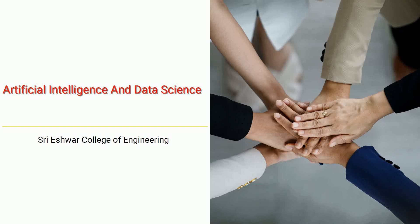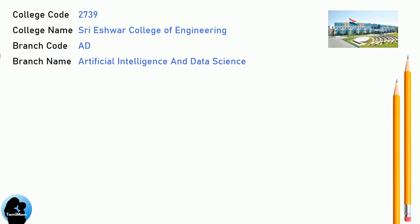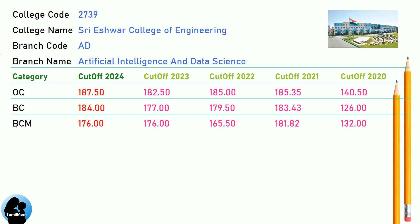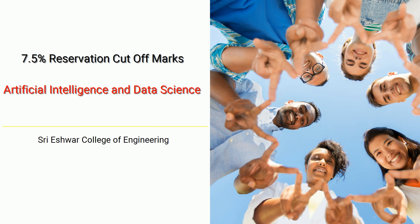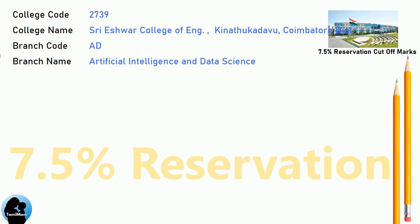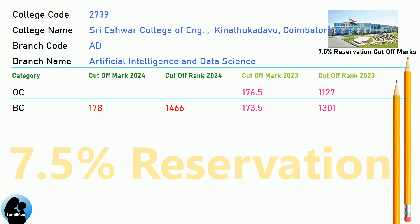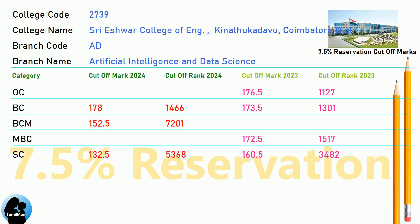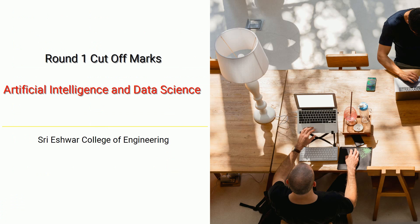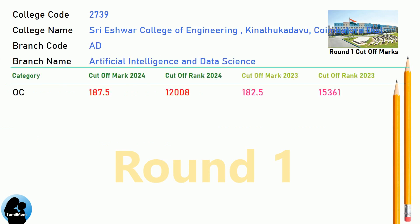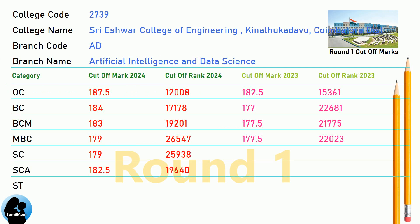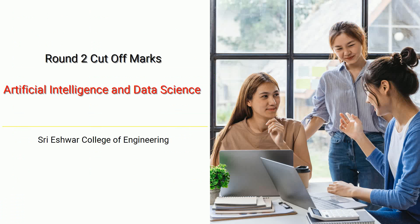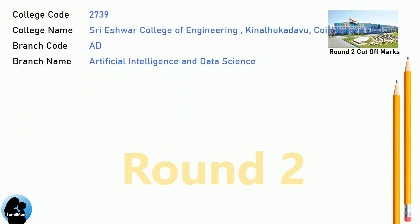DNA Cut-Off for Shri Aishwara College of Engineering in Artificial Intelligence and Data Science. DNA 7.5 Reservation Cut-Off for Shri Aishwara College of Engineering in Artificial Intelligence and Data Science. DNA Round 1 Cut-Off for Shri Aishwara College of Engineering in Artificial Intelligence and Data Science. DNA Round 2 Cut-Off for Shri Aishwara College of Engineering in Artificial Intelligence and Data Science.